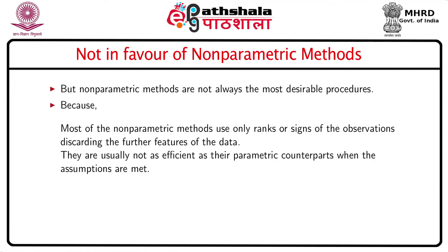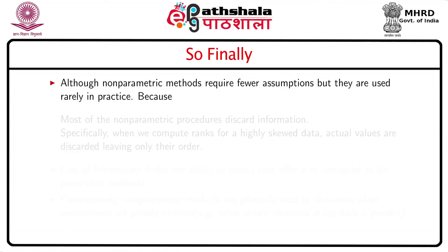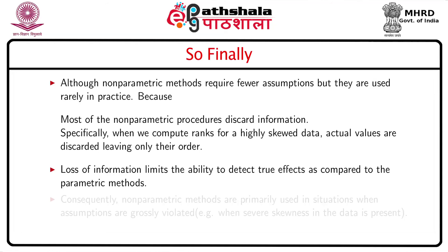Secondly, nonparametric methods are usually not as efficient as their parametric counterparts when parametric assumptions hold. If it is known that the underlying distribution is normal and we use a t-test, then the t-test is the most efficient even compared to nonparametric alternatives. Although nonparametric methods require fewer assumptions, they are used rarely in practice because most nonparametric procedures discard information. When we compute ranks for highly skewed data, actual values are discarded leaving only their order, and this loss of information limits the ability to detect true effects.